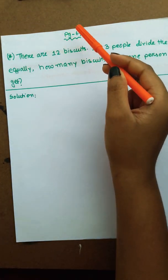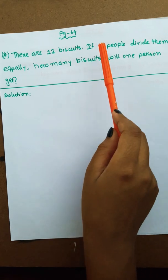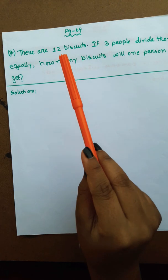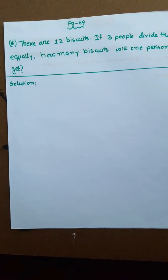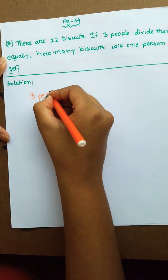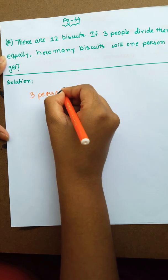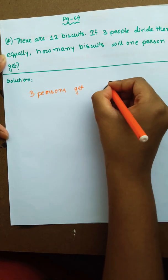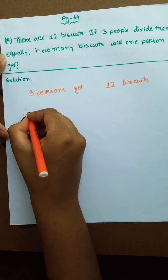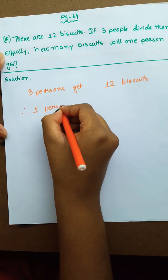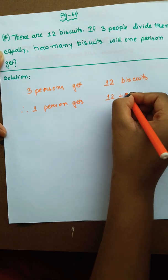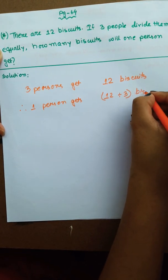Now, the next math is page 64. There are 12 biscuits. If 3 people divide them equally, how many biscuits will one person get? We need to divide the biscuits equally among 3 people.